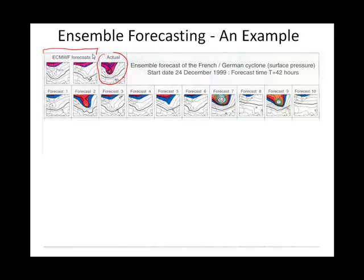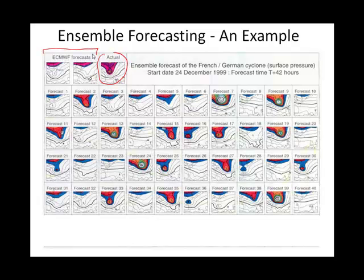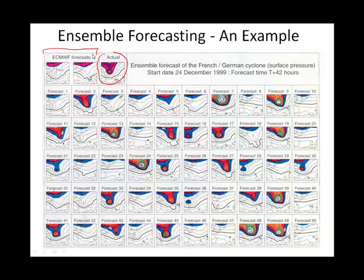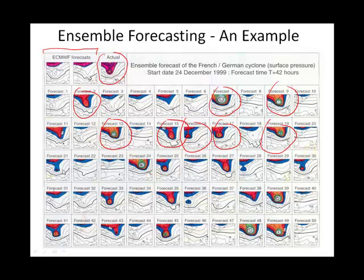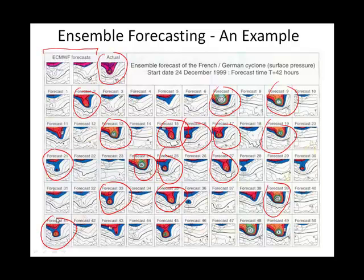There's forecasts 1 through 10, 11 through 20, 21 through 30, and so on — a set of 50 different outcomes with the same initial conditions, just varied slightly. The point is, if you look for color and tight isobars suggesting a bad Christmas Eve, mid-latitude cyclones have a central low pressure with an assortment of nasty weather. Looking at these, you could argue they might have anticipated an issue even with the model they were using. That's ensemble forecasting.